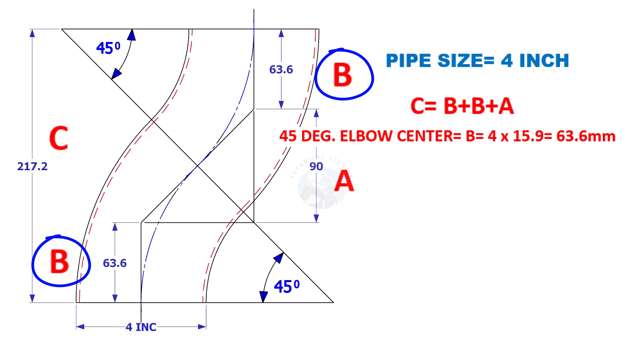Elbow center B is four inch multiply by 15.9. 15.9 is constant. So the value of B equals 63.6 millimeters.